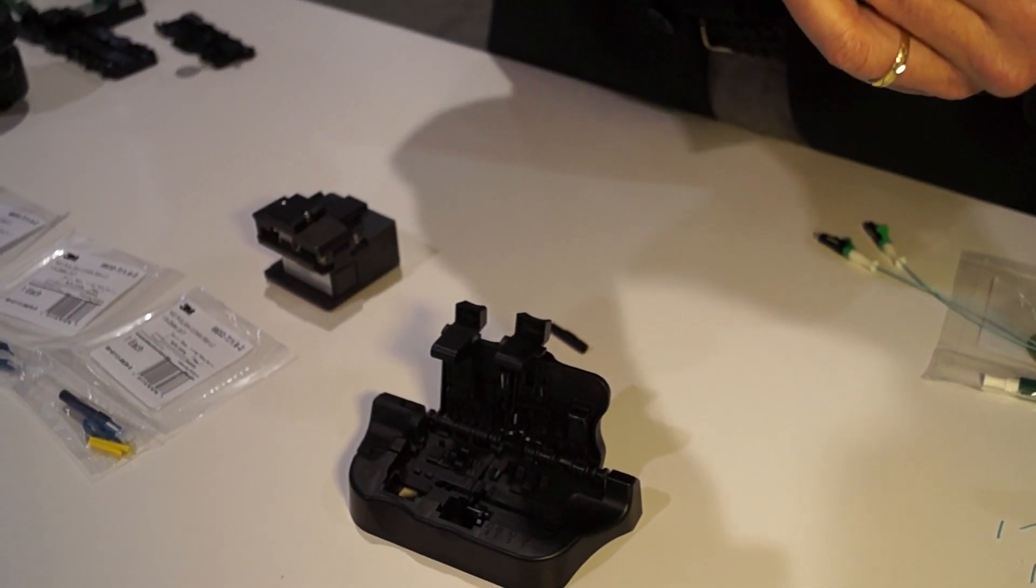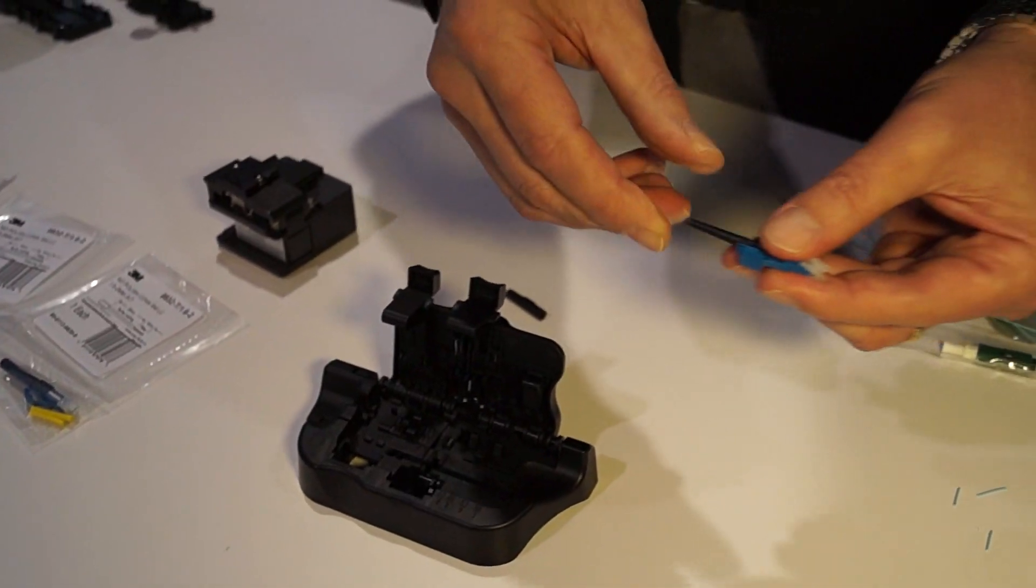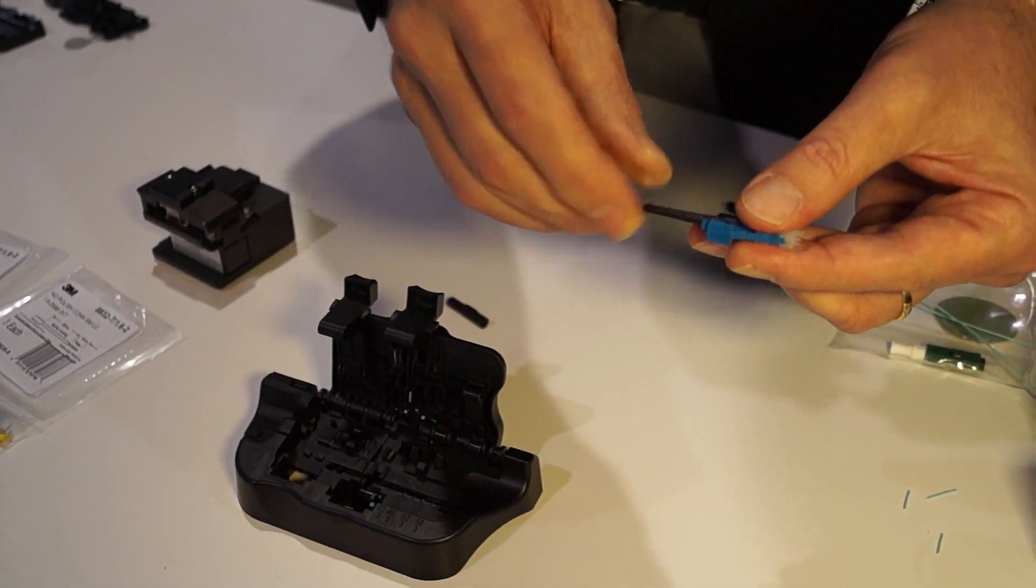Then at this point, you simply take the dust cap, as shown, actuate the splice, and then you have a fiber connection.